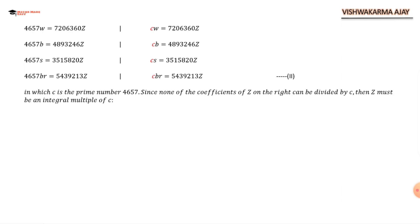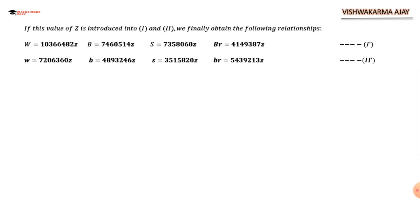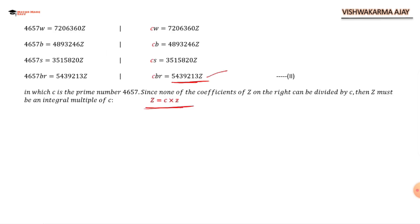4657 is a prime factor. So I substitute z = c × small z, where c = 4657. Capital Z is a composite of c and some integer small z. I put this value of Z = c × small z into equation one and equation two to get the full set of values.